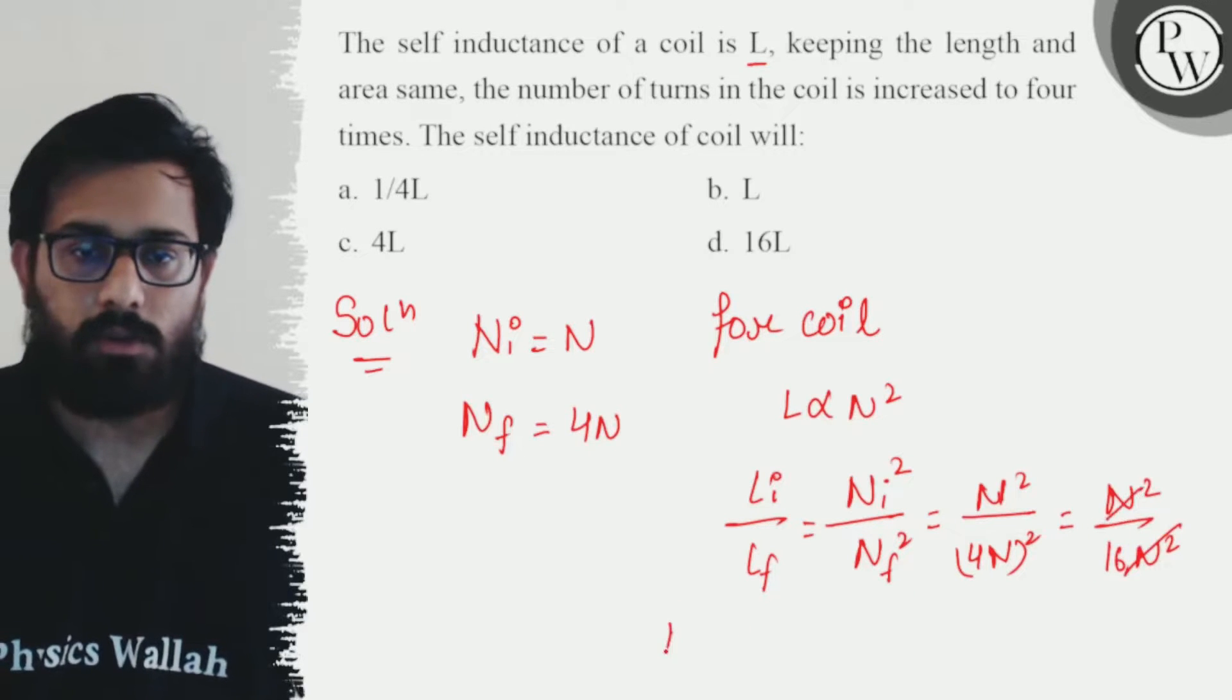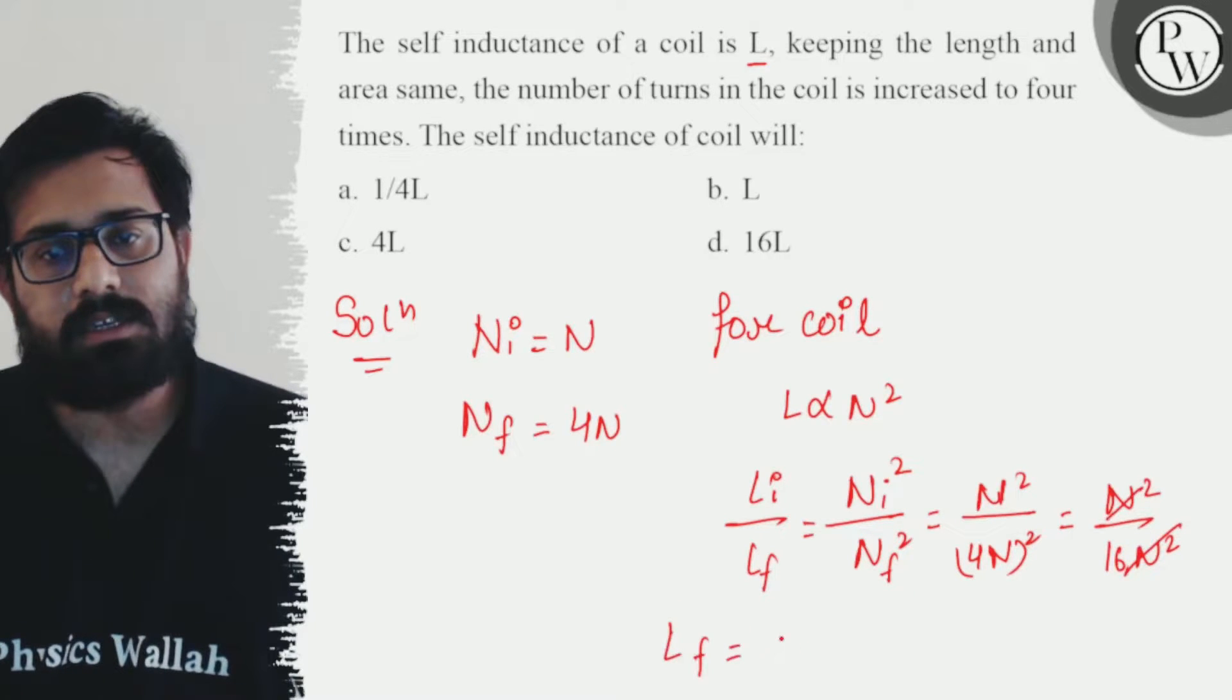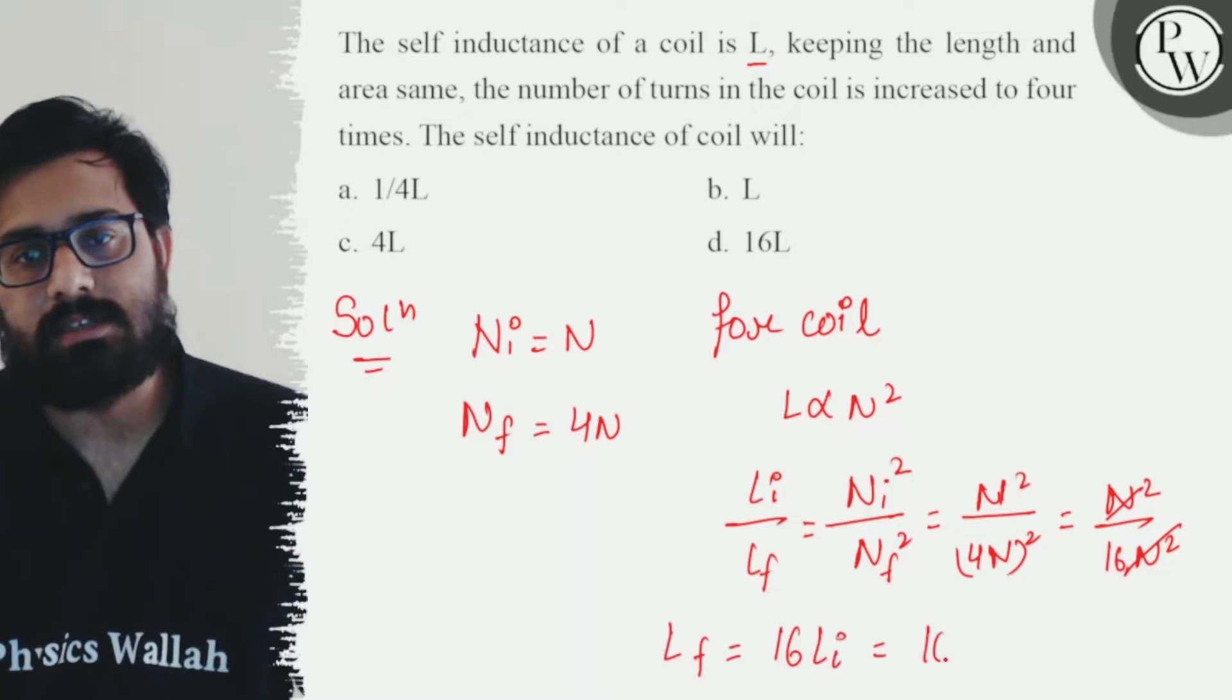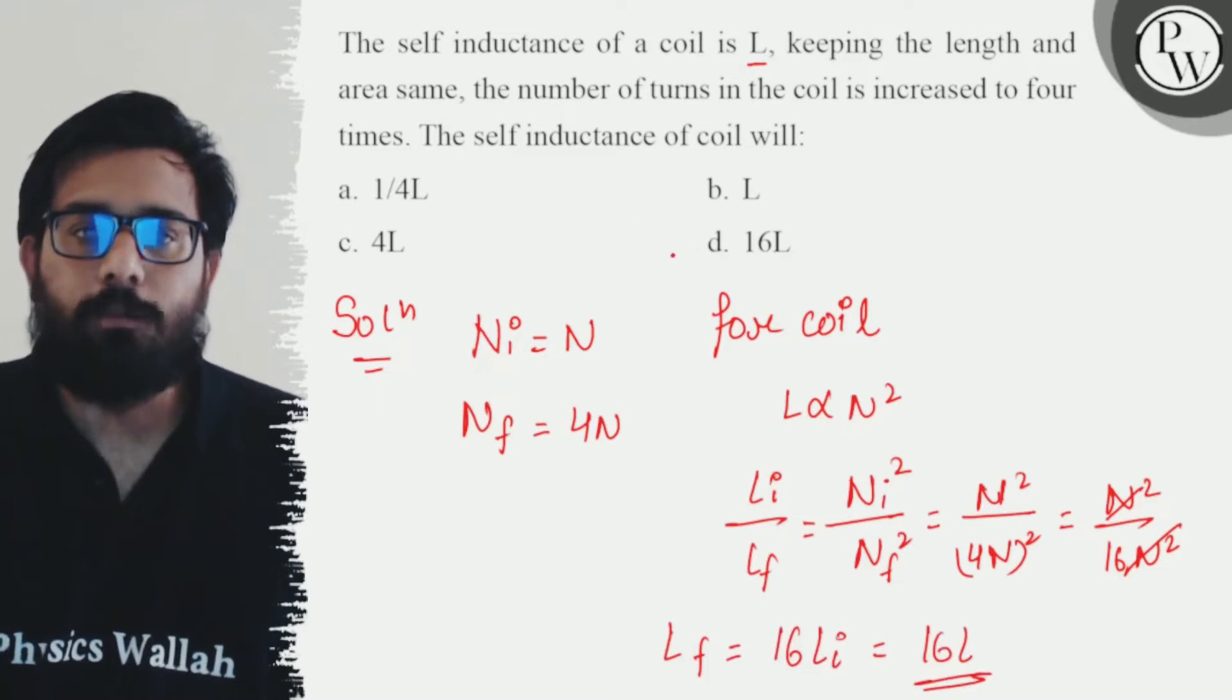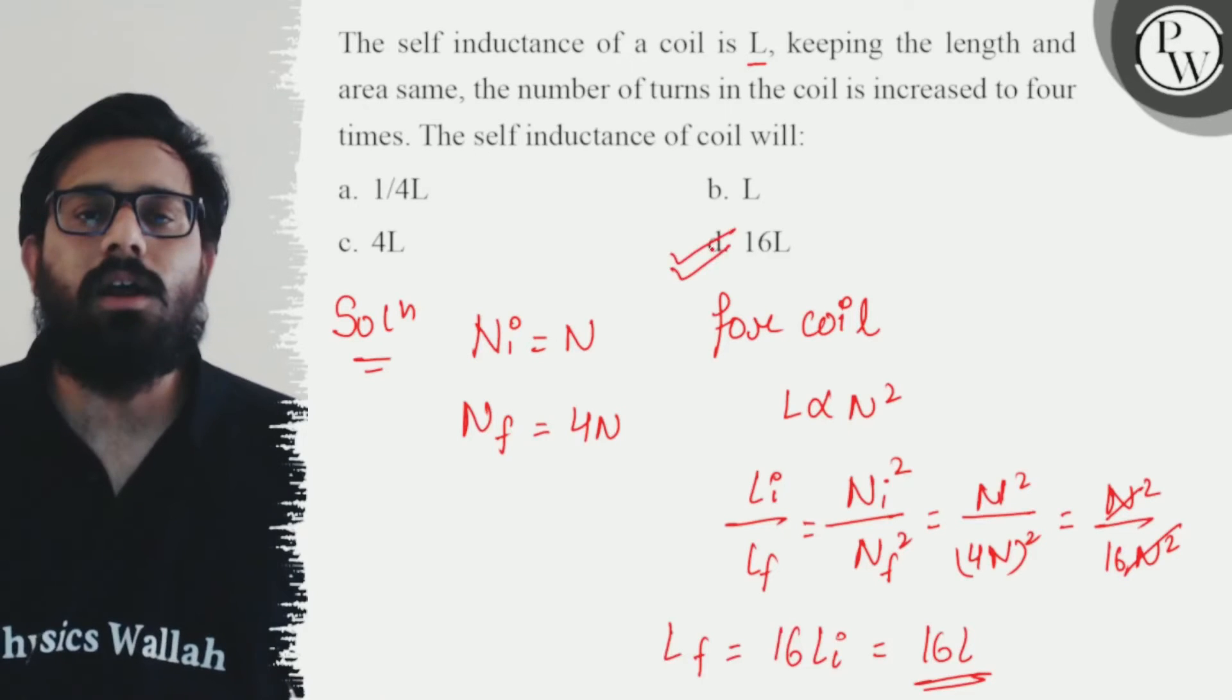So this can be written as N squared by 16N squared. This cancels out. So your final L comes out to be 16 times the initial L. So this becomes 16 L. So your D option is absolutely correct. Okay.